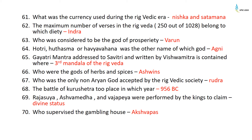The maximum number of verses in the Rigveda — 250 out of 1028 — belong to the deity Indra. Varuna was considered to be the god of prosperity. Hotri, Hutsma, or Havya Vahan was the other name of the god Agni. Who was considered the only non-Aryan god accepted by the Rigvedic society? It was Rudra.